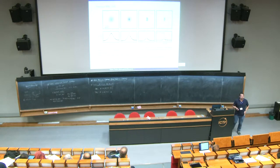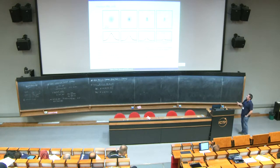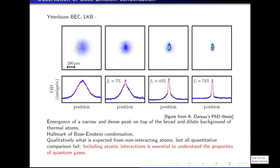So last time we picked up with this picture where you see the appearance in the absorption images of a Bose-Einstein condensate out of a thermal background. We discussed how we can trap, manipulate, and image these condensates. At the beginning of this lecture, I'd like to discuss a few properties of these gases.